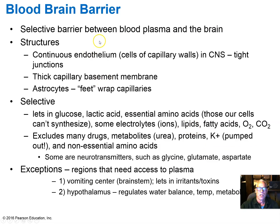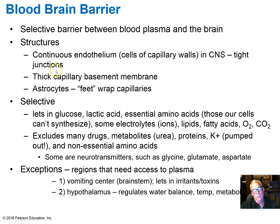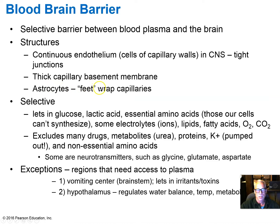The blood-brain barrier is a selective barrier between the blood plasma and the cerebrospinal fluid in the brain. The components of the blood-brain barrier are an ultra-tight or continuous endothelium — the cells that make up the blood capillaries, which are very restrictive in what they allow to pass between cells. There's also a thick basement membrane, an unusually thick mat of proteins that the cells secrete and anchor themselves to. The astrocyte cells — those glial cells that support neurons in the central nervous system — have foot processes that wrap around the capillaries. Together, those form the blood-brain barrier.